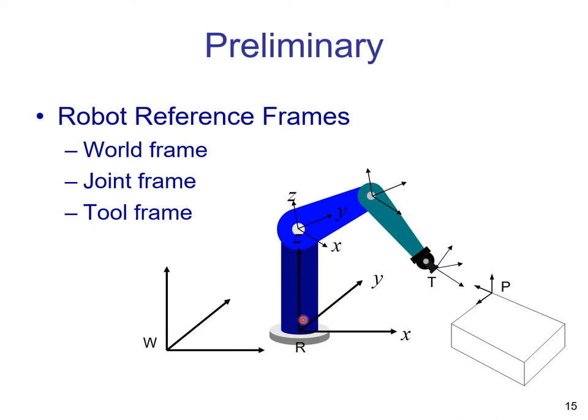For this robot, we have the base frame with X, Y, Z. Then we assign frames to each one of the joints — another frame X, Y, Z at one joint, another frame at the second joint. Finally, we have the tool frame, which gives us the orientation of the approach vector. It's also possible to have frames attached to obstacles or objects.